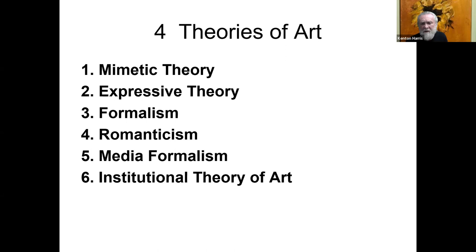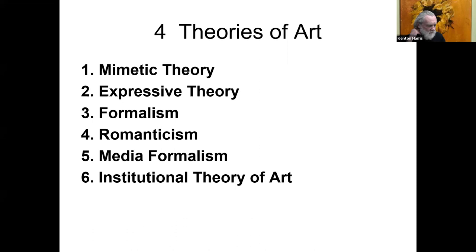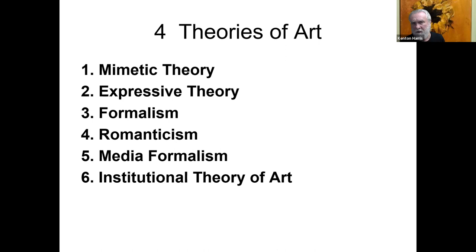Finally, we'll look at the institutional theory of art, which is curious in that it denies there is a single universal nature to works of art. That actually poses certain problems for anyone who wants to argue for the superiority of one work of art over another. So the four freestanding theories are mimetic, expressive theory, formal theory, and media formalism.